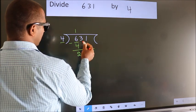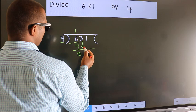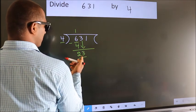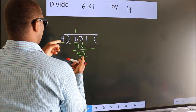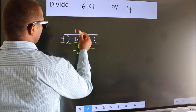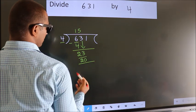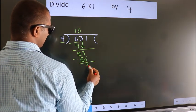After this, bring down the beside number. So, 3 down. So, 23. A number close to 23 in the 4 table is 4 fives 20. Now, we subtract. We get 3.